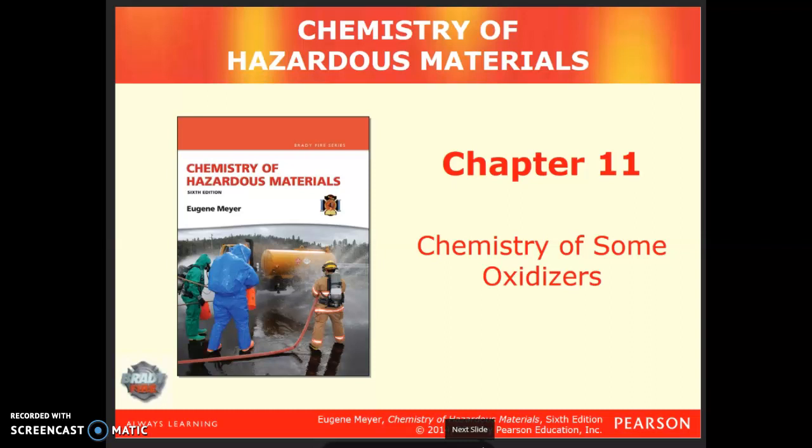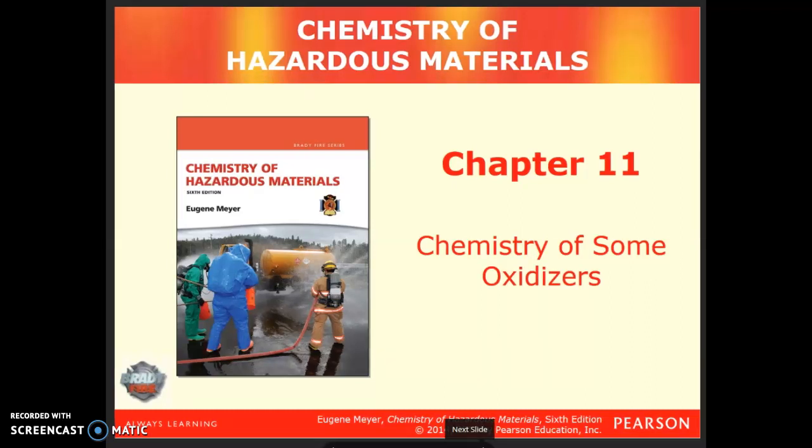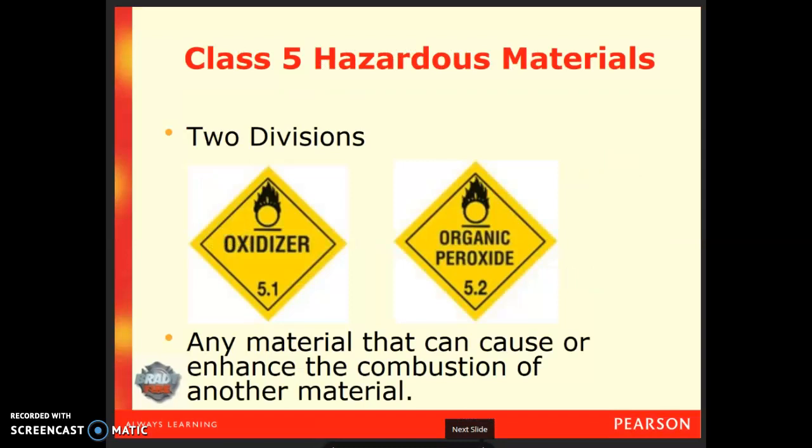As far as hazardous materials are concerned, oxidizers are classified as Class 5 hazardous materials, and they fall into one of two divisions. They can either be pure oxidizers or they can be peroxides, and there is a distinction between the two that we will get into later on in the chapter.